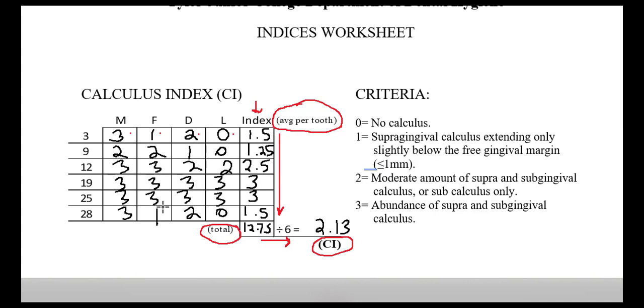A couple of pointers: we're going to round off to the second decimal, and we're going to make sure that our overall calculus index is less than three. There is an auto note in Eaglesoft for you to record your indices. So when you record the indices, this is the number that we want to record.